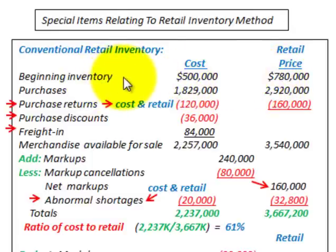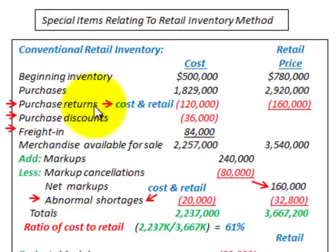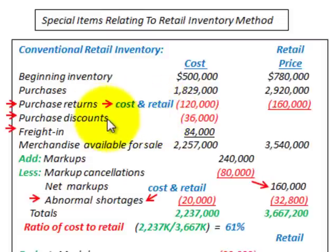Starting with beginning inventory, we have both a cost and a retail price. Then we have purchases for the period, again with their cost and retail price. Purchase returns are a special item — they affect both columns, with the cost amount deducted from our cost column and the retail price of those returns deducted from our retail column.